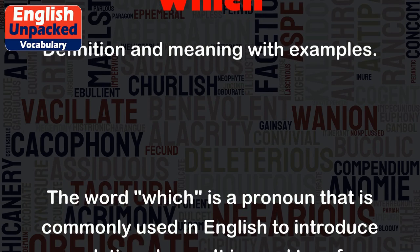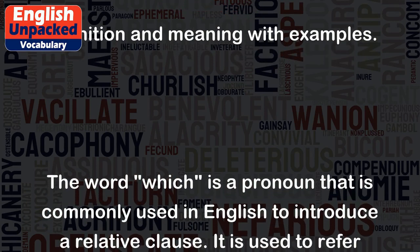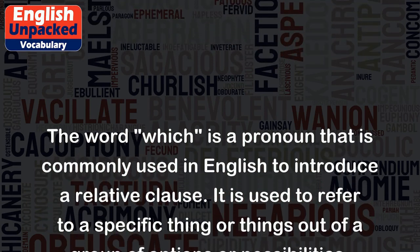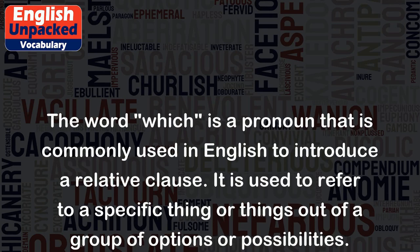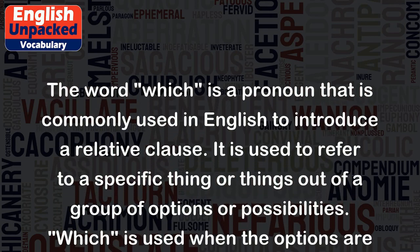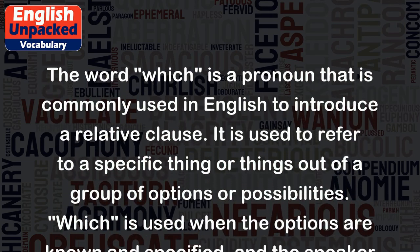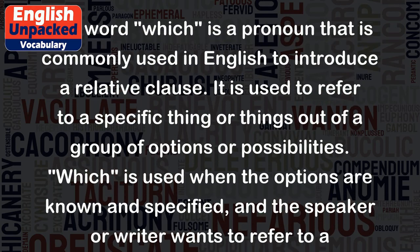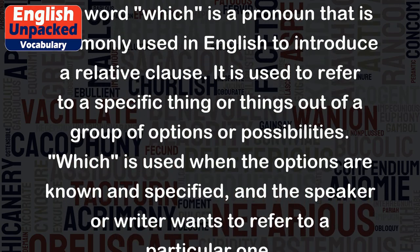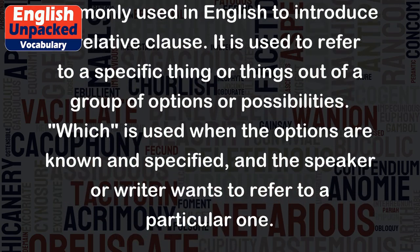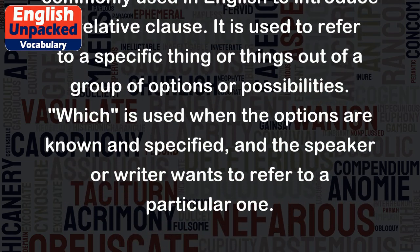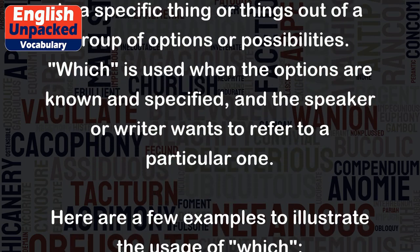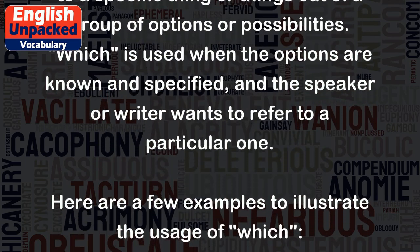The word WHICH is a pronoun that is commonly used in English to introduce a relative clause. It is used to refer to a specific thing or things out of a group of options or possibilities. WHICH is used when the options are known and specified, and the speaker or writer wants to refer to a particular one.